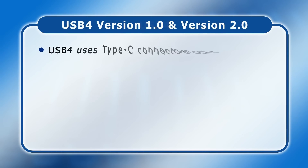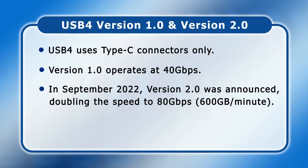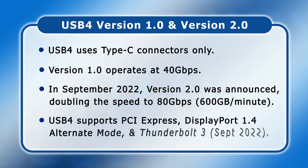USB 4 uses Type C connectors only and initially operated at a theoretical 40 gigabits per second. However, in September 2022 version 2.0 was announced and will double the theoretical speed to 80 gigabits per second, equating to 600 gigabytes a minute, which is staggeringly fast for a consumer connector. USB 4 also supports PCIe Express, DisplayPort 1.4 alternate mode, and Thunderbolt 3, which uses the same Type C connector.